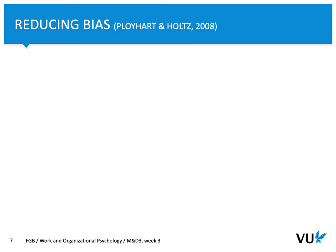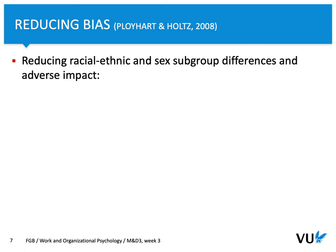Ployhart and Holtz suggest a few solutions that can be implemented to reduce bias and thus reduce unfairness during the selection procedure. To reduce racial, ethnic, and sex group differences — and thus reduce adverse impact — first of all, we should perform a job analysis. You probably remember that job analysis is also really important when we create and select measures for personnel selection. It's really important to know what kind of skills, competencies, or other characteristics are important for performing a job at an expected level.